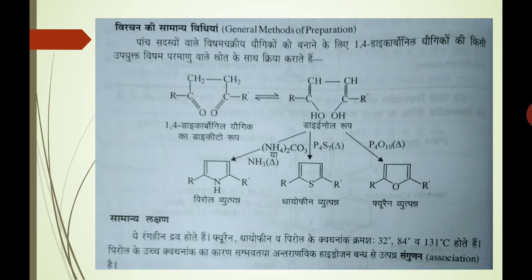Ab hum dekhenge ki jo 5-membered heterocyclic compounds hain, unki virachan ki saamaanya vidhiyaan kya hain — what are the general methods of preparation of 5-membered heterocyclic compounds. Paanch sadasyon wale heterocyclic compounds ko banaane ke liye hum 1,4-dicarbonyl compounds ki reaction karwa dein kisi upyukt heteroatom wale kisi source ke saath. Jaise hum yahan par dekh rahe hain, humne 1,4-dicarbonyl compound ya di-keto form ko liya hai, jo keto-enol form ke saath samyavastha mein rahti hai.